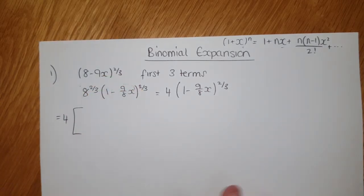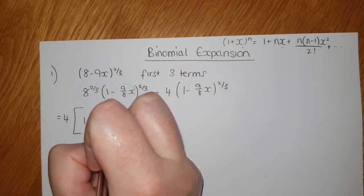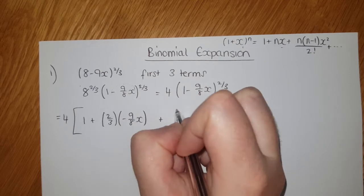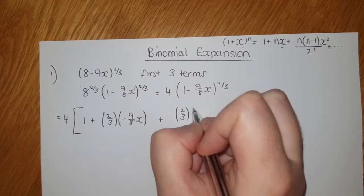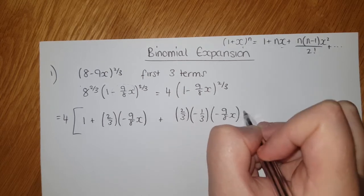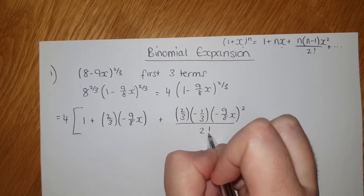We get 1 plus n is 2/3, x is -9/8 of x, n is 2/3, n-1, you get your x term squared over 2 factorial.